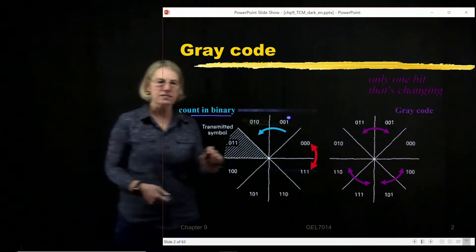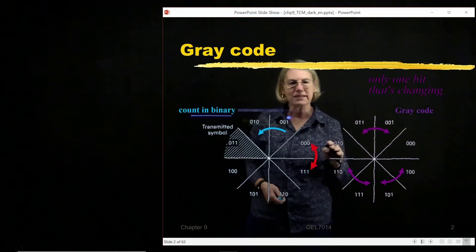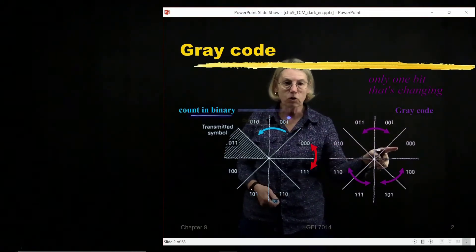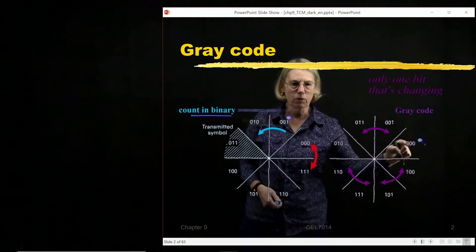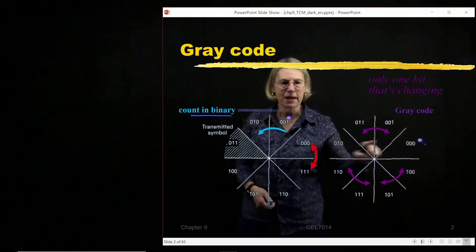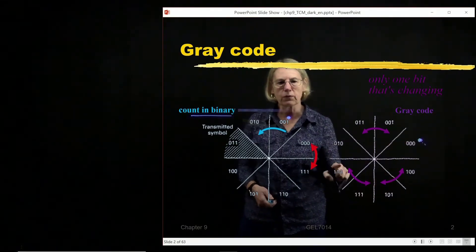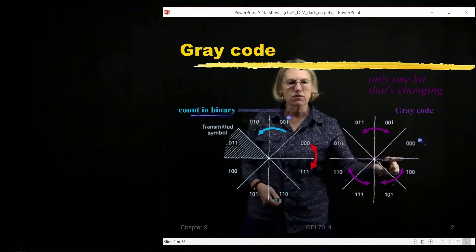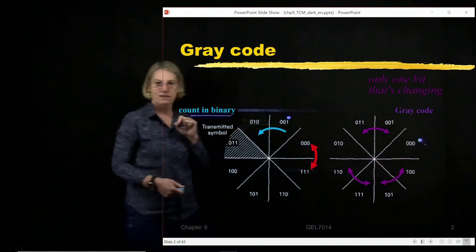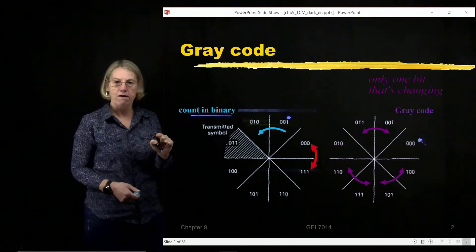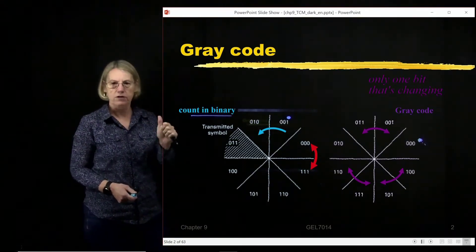So what we do is we use instead something called a gray code. And in the gray code when we make the assignment between symbols, for instance, now this angle, this symbol will be assigned 000 just like last time. But now when we go one neighbor closest neighbor over we're being very careful so that the nearest neighbor there's always only one bit that changes. So that when we have a symbol error that will only give us one bit error. Okay, so that's like the best possible outcome.